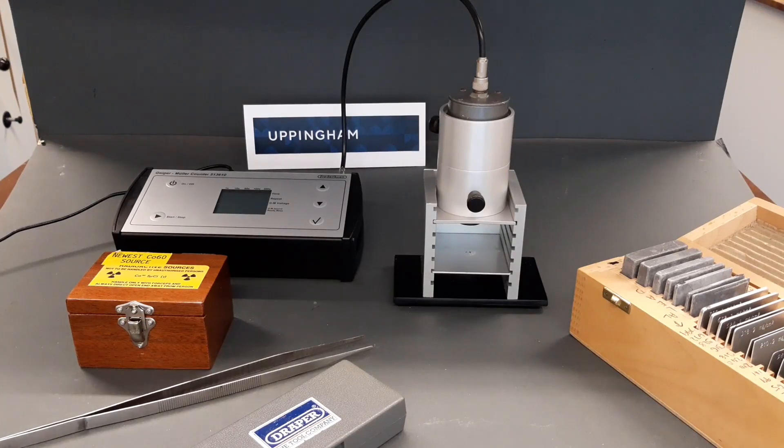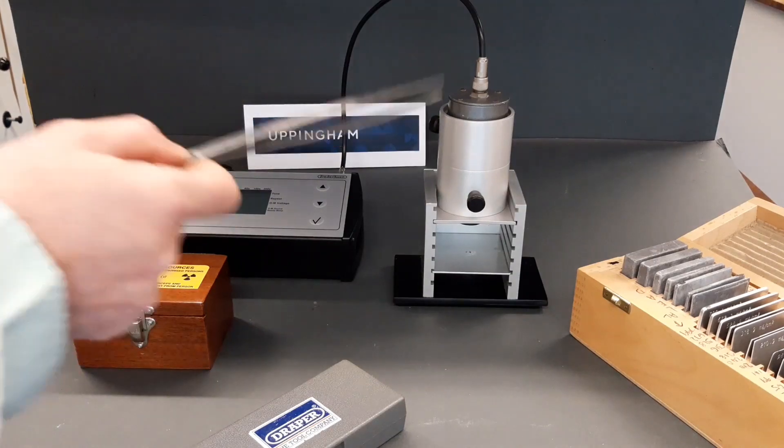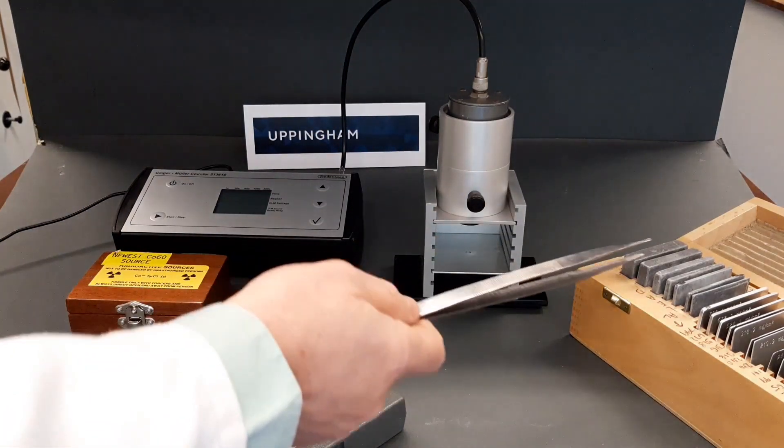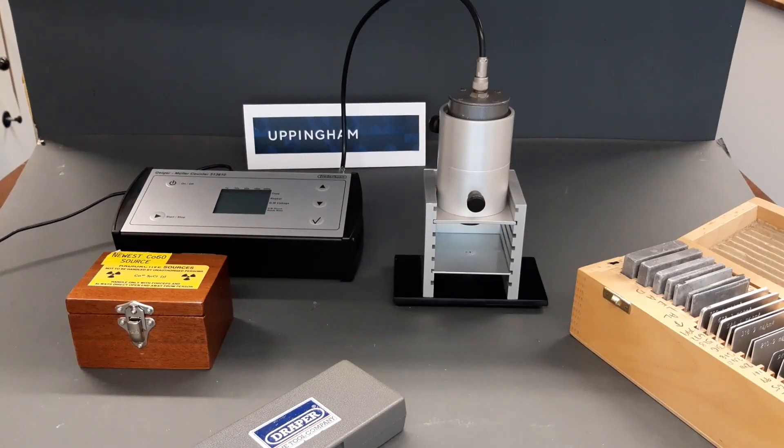The apparatus we've got here is to investigate the absorption of gamma rays through aluminum and lead. We've got a cobalt source in this castle here, a counter and Geiger-Müller tube, and the various samples of aluminum and lead which are available offline.